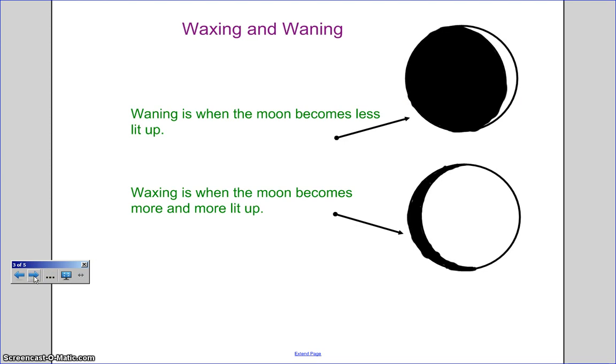All of the phases depend on the way that the sun's rays reflect on it. Also, there is one side of the moon that we never see. It is known as the dark side of the moon.